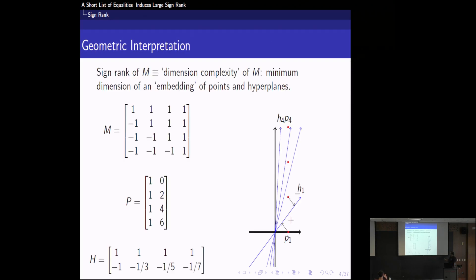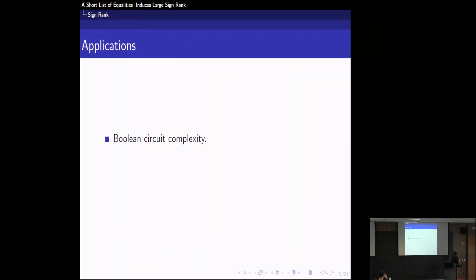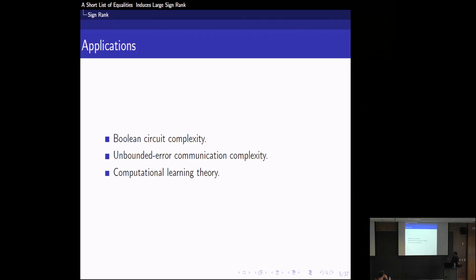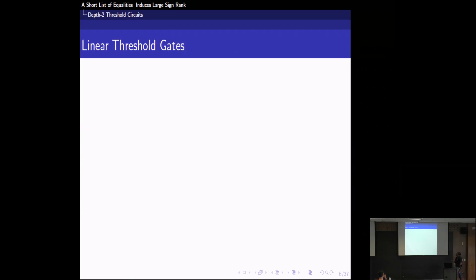Where does sign rank have applications? Most of this talk is devoted to proving sign rank lower bounds. Sign rank lower bounds imply lower bounds in Boolean circuit complexity and unbounded-error communication complexity. Sign rank upper bounds also have applications in computational learning theory. Through this talk I'll focus on the first two points.